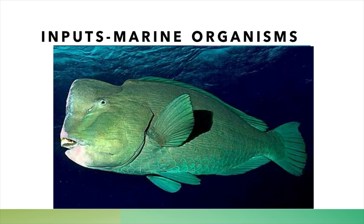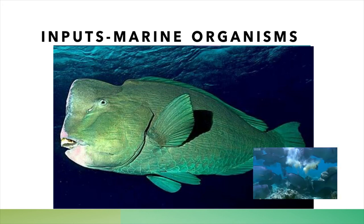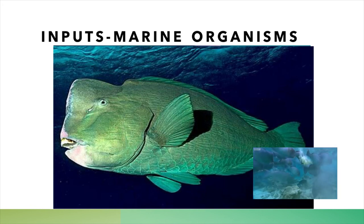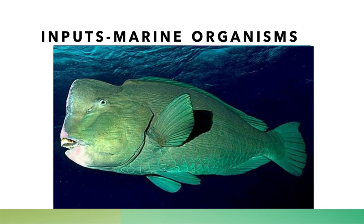Another large input that you can get in certain areas of the world — mainly tropical areas — is a marine organism input. Specifically, this marine organism input is generated by bumphead parrotfish. The jaws of these bumphead parrotfish are able to destroy parts of coral as they seek the algae that grows on the surface to feed themselves. When they defecate in the water, they leave behind fine particles of sand, which help build the beautiful tropical beaches you see in places like the Maldives or the Seychelles.